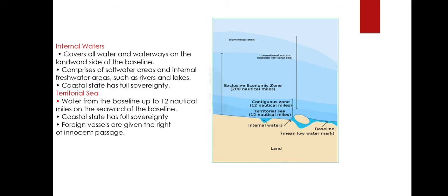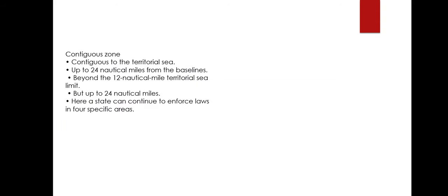The right of innocent passage does not apply in internal waters. The right of innocent passage means any passage not harmful to the peace or security of the coastal state, in accordance with UNCLOS and international law. Activities like fishing, polluting, weapons practice, or spying by a foreign ship are not considered innocent passage. Moving on to territorial seas: this is the water from the baseline up to 12 nautical miles seaward. Coastal states have full sovereignty here, including over the airspace above and the seabed below the territorial sea. Foreign vessels are given the right of innocent passage in territorial seas.